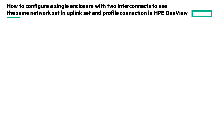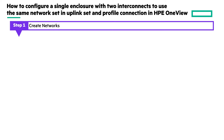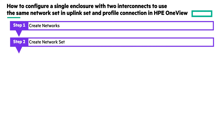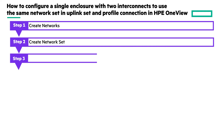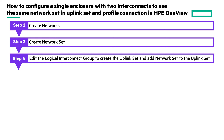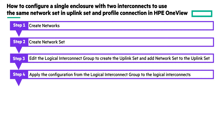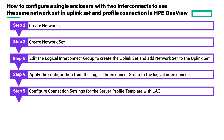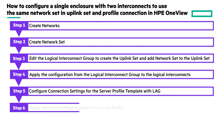Now we will walk through the steps to create the network set and configure HP OneView for this use case. First, create networks. Then, create the network set and add the networks to it. Edit the logical interconnect group to create an uplink set and add the network set to the uplink set. Apply the configuration of the logical interconnect group to all the logical interconnects in the group to make the resources consistent. Create a server profile template and configure the connection settings to add the same network set as in the uplink set. Now apply the settings from the server profile template to create the server profile.